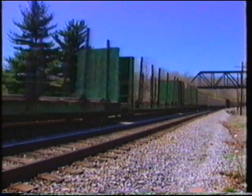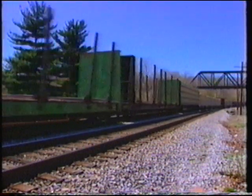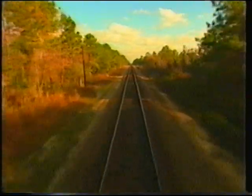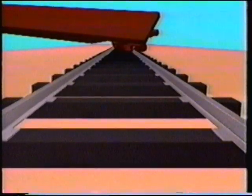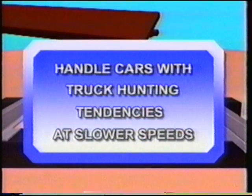Truck hunting occurs at higher operating speeds than harmonic rock, with a critical speed range estimated above 45 miles per hour. It is a complex interaction between cars and track that causes the truck to weave, usually with the flanges striking the rail. Truck hunting occurs most frequently with light cars having roller bearing-equipped trucks on tangent, continuous welded rail at high speeds. It can become severe enough to cause wheel lift and derailment, but can be diminished by handling affected cars at slower speeds.